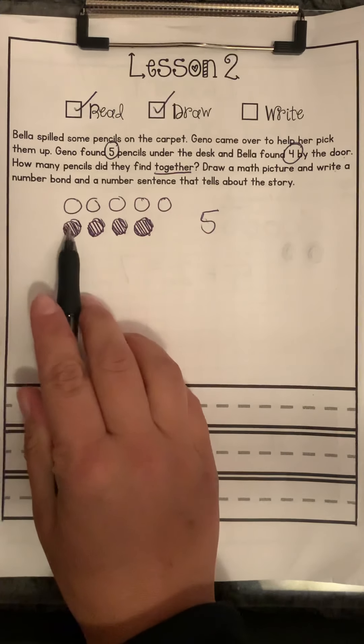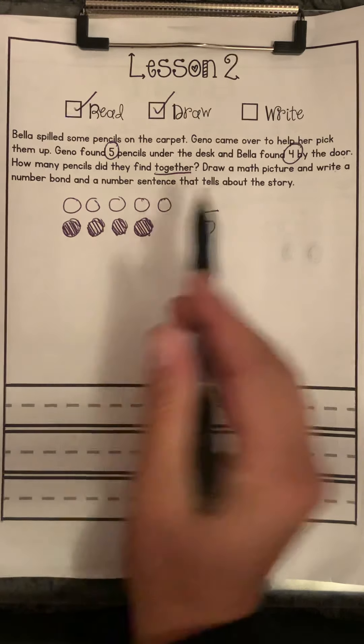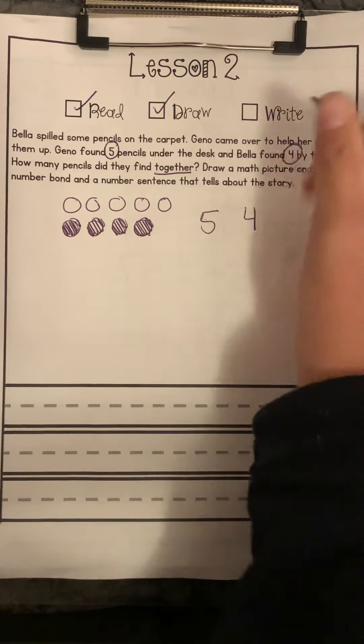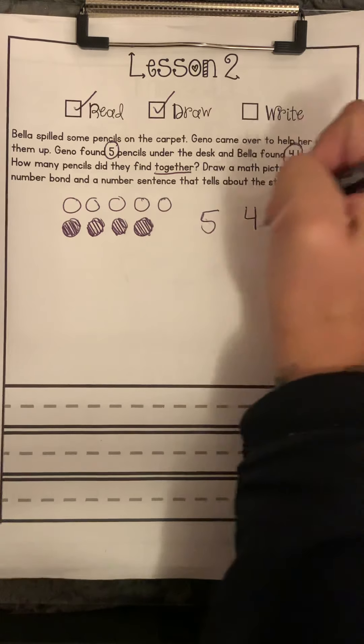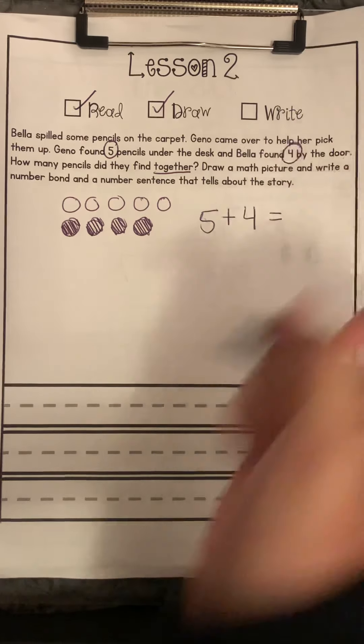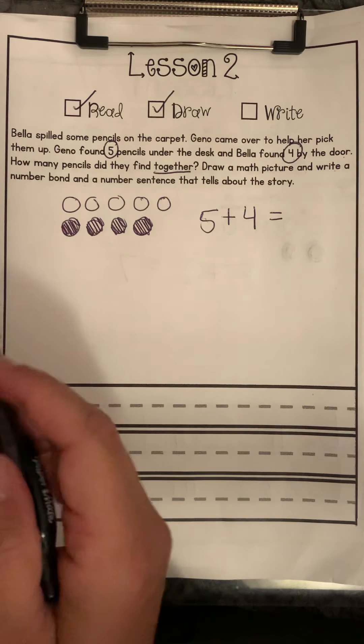Bella found four. One, two, three, four. And we know that together means we're going to add. So to find our answer, let's count up all the pencils.